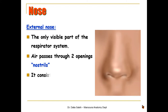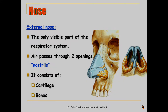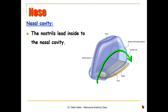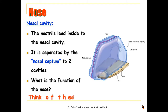The external nose consists of cartilage and bones. The nostrils lead inside to the nasal cavity. This cavity, or space, lies inside the skull and is separated by the nasal septum into two cavities.